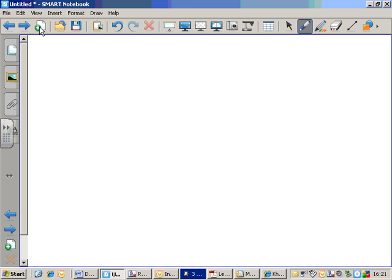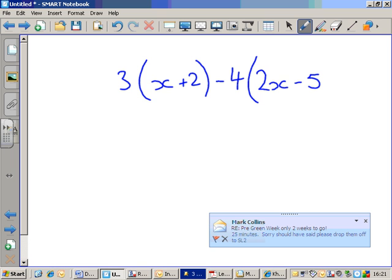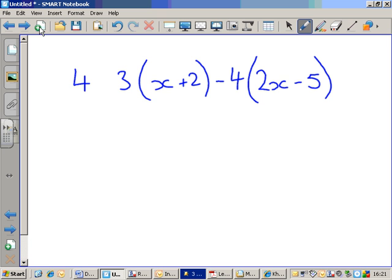Here's an expression with two sets of brackets. Three brackets, X plus two, close brackets, minus four, open brackets, two X, minus five, close brackets. There it is. I'm going to pop something else at the front here, just to test whether or not you remembered what we just said. Four plus three, open brackets, X plus two, close brackets, minus four, open brackets, two X minus five, close brackets.